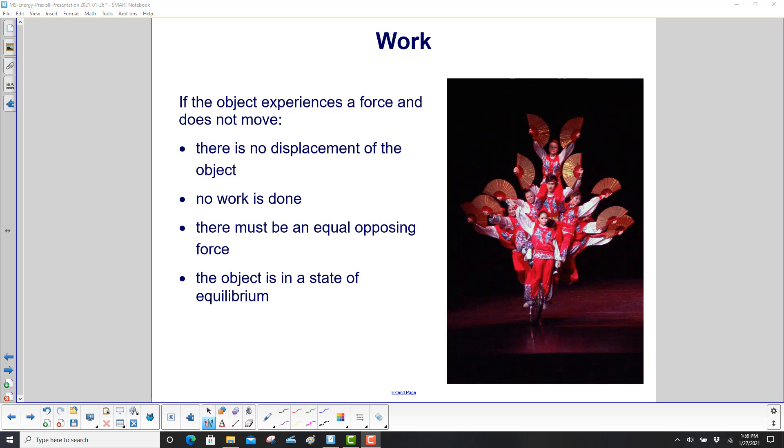If an object experiences a force and does not move, so let's just look at this group of people here, don't worry about the bicycle here, pretend it's not there, clearly they're exerting forces on each other. But if nobody's moving, there's no displacement of the people, so therefore no work is done. That means there must be an equal opposing force, because the object is in a state of equilibrium.